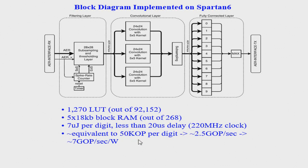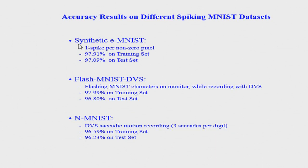This is equivalent to about 50 kilo-operations per digit, or 2.5 gigaops per second, and about 7 gigaops per second per watt. We tested this with different datasets: transforming MNIST digits with one spike per pixel per digit gave 97% recognition on the test set; flashing on the monitor using the DVS gave 96.8%; and using the publicly available N-MNIST dataset recorded with saccades on a spiking retina gave 96.23% recognition on the test set.